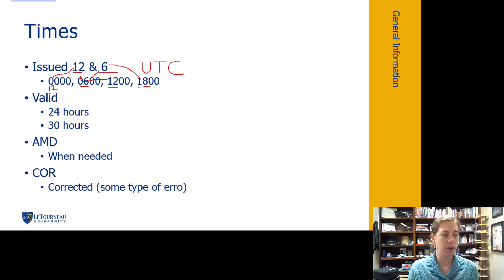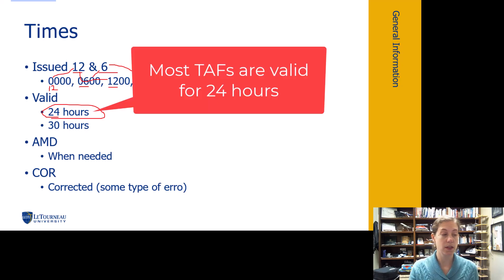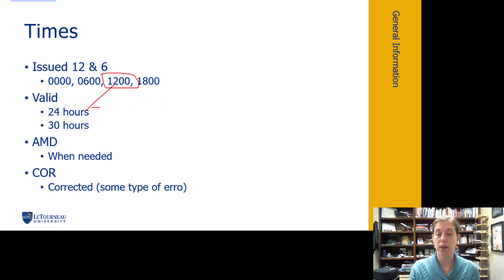There's two valid periods that they are issued for. First off, we have a 24 hour, the vast majority of TAFs are issued with the 24 hour valid period. Meaning, if my TAF is issued here at noon time, we have a valid period. If it's a 24 hour TAF, it's good until 12 the next day. So 24 hours later, it's still good to 12 noon.